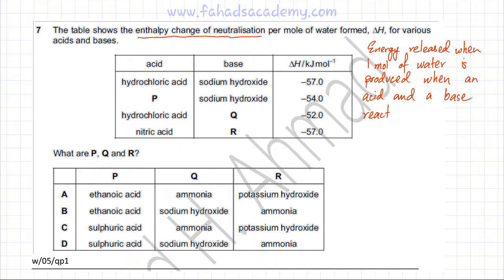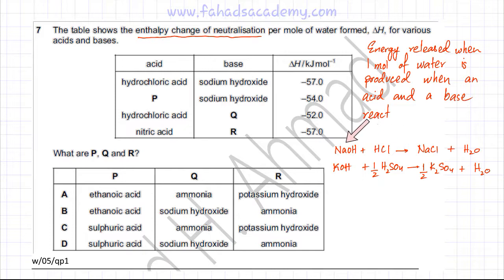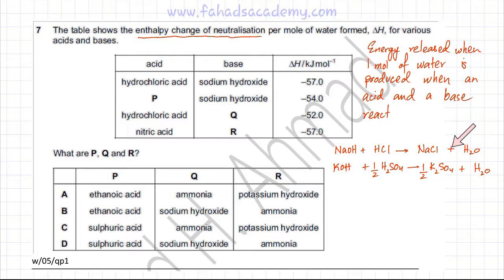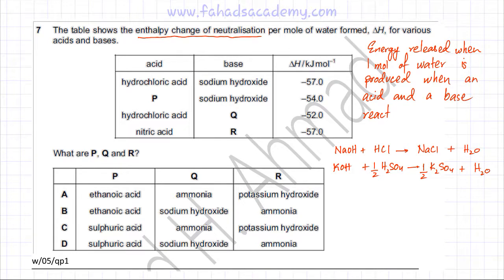Here are two example reactions. NaOH (a base) reacts with HCl (an acid) to produce a salt plus one mole of water — this is the enthalpy change of neutralization. Similarly, KOH reacts with sulfuric acid, producing a salt and one mole of water. The enthalpy change of both reactions is called the enthalpy change of neutralization, written as ΔH with a subscript N.